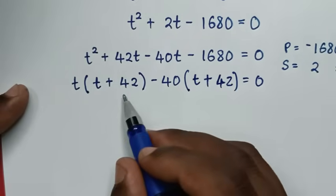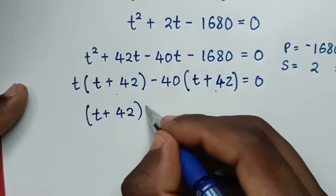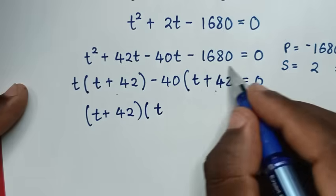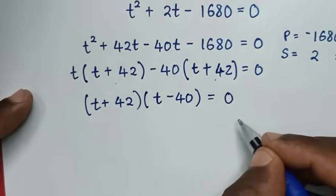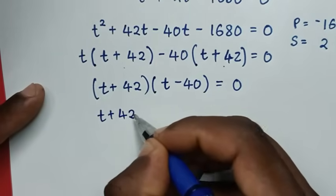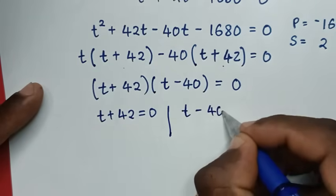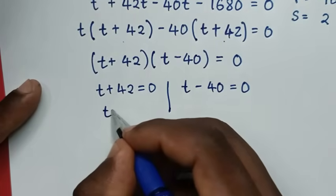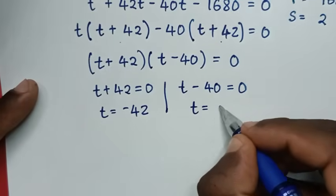Factoring by grouping: t(t plus 42) minus 40(t plus 42) equals 0, giving (t plus 42)(t minus 40) equals 0. So the two solutions are t plus 42 equals 0, giving t equals negative 42, and t minus 40 equals 0, giving t equals 40.